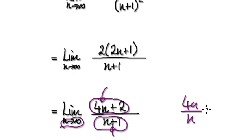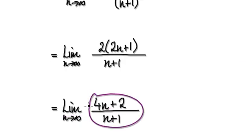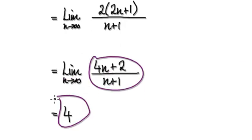As n heads towards infinity, you can divide top and bottom by n if you want. So this divided by n, this divided by n, you've got 4 up here and then over 1. So the limit of this will be 4.